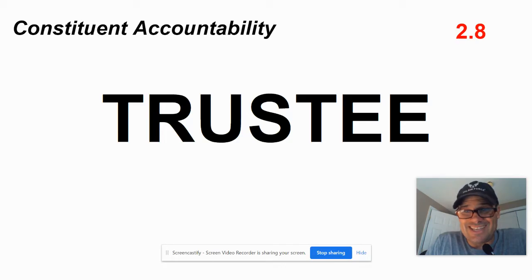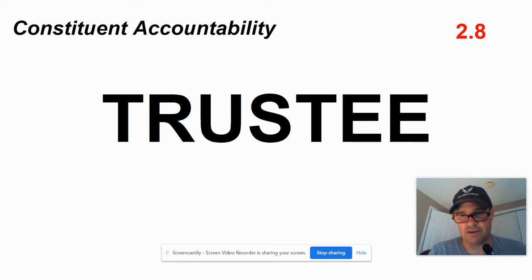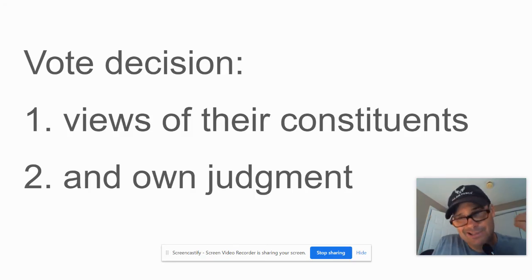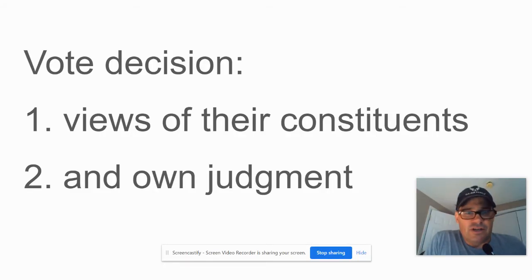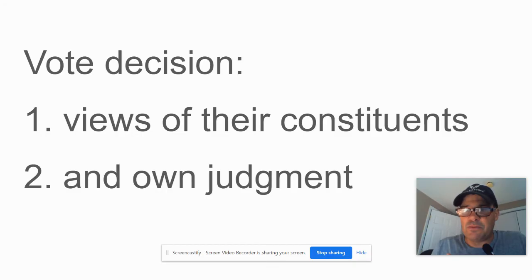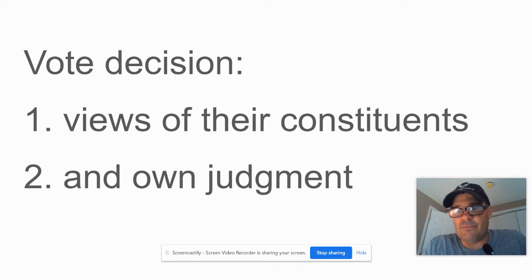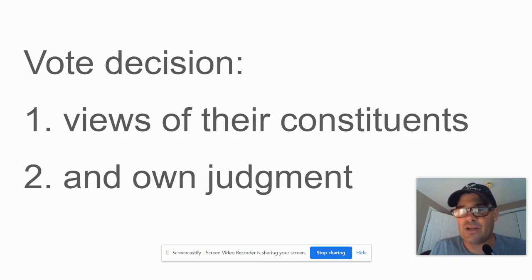Second one is called a trustee, 2.8. I always think of a trustee this way: trustee — trust me. So the idea is that you'll take into consideration your constituent views. If they fairly strongly believe in something, you'll probably go with them. But at the same time, you're going to use your own judgment. You're not just a vessel that whatever the constituents want, they get. They elect you to use your own judgment. There's a little bit more here of refining the beliefs of the constituents — if you remember back from the Federalist Papers when we talked about that.